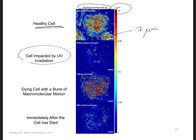The second image shows a stressed cell that is being exposed to harmful UV radiation. You can see that there is a lot less motion going on inside of the cell. Then the third image shows a burst of macromolecular motion occurring inside of the cell, as the cell starts to die. It's dying as a result of the UV rays.